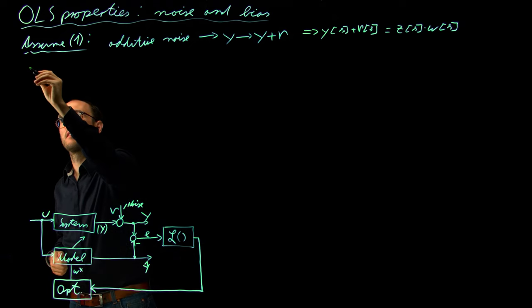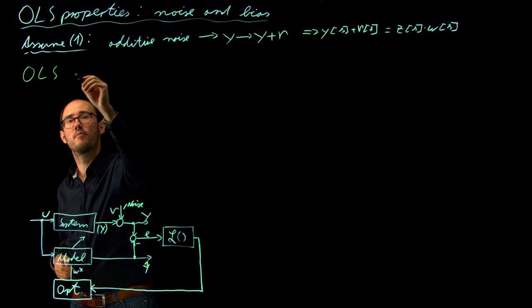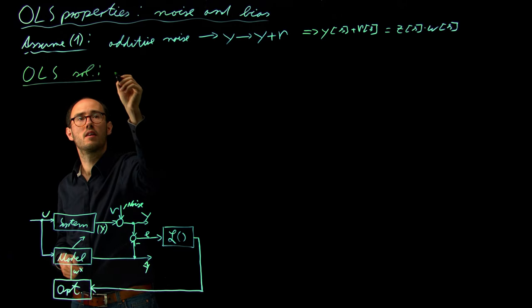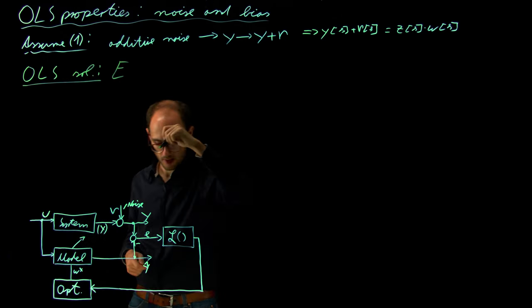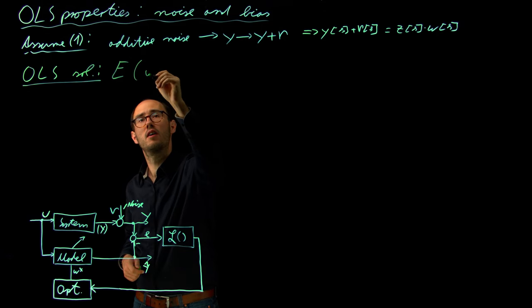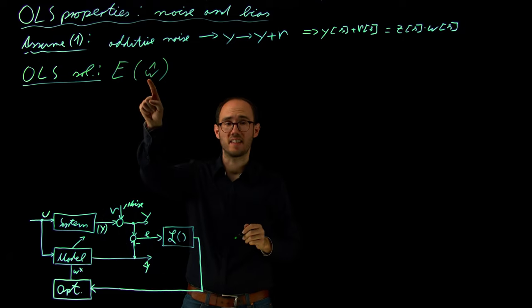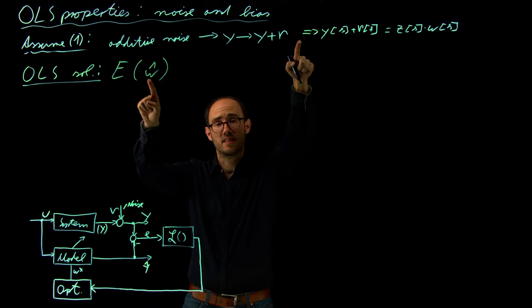And initially, I'm interested into the OLS solution in terms of the expectation, so that E is the expectation of W hat. So of the estimated parameter vector when we consider this additive noise.